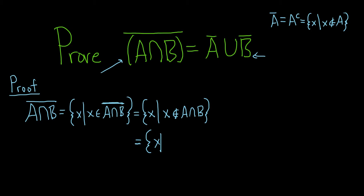So if x is in the intersection, it's in both. So if it's not in the intersection, that means that it's not in A, or it's not in B, right? So we're saying it's not in both. So if it's not in both, that means it's either not going to be in A, it's not going to be in B, or it's not going to be in both.